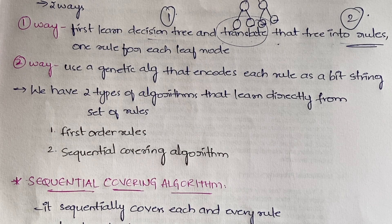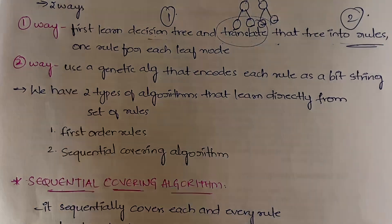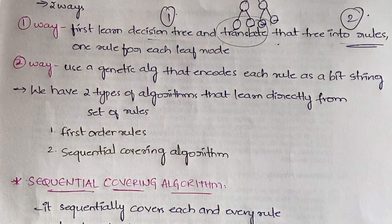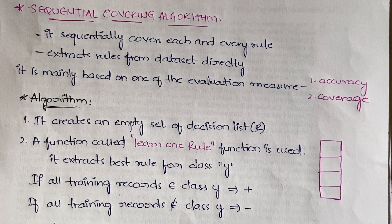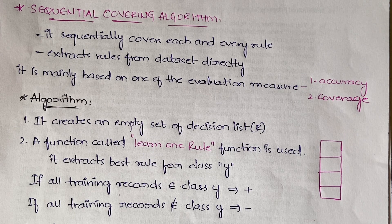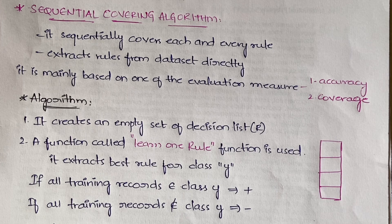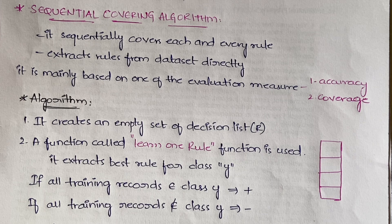The sequential covering algorithm sequentially covers each and every rule. If there are 10 rules to learn, ordered 1 to 10, it will process them one after another — first 1, then 2, then 3 — sequentially covering each rule.